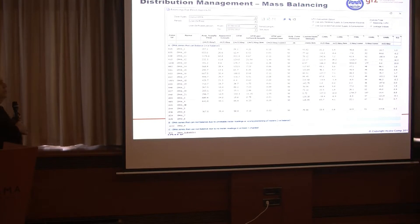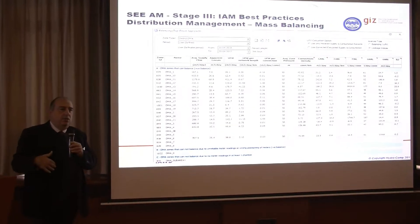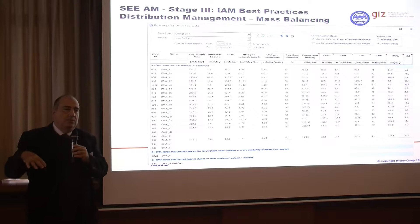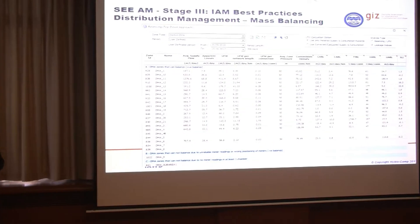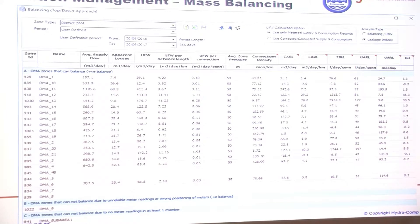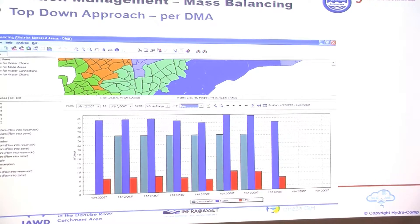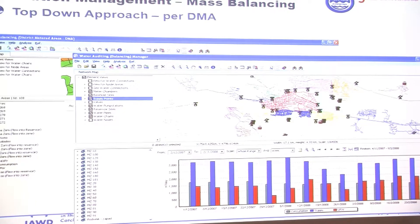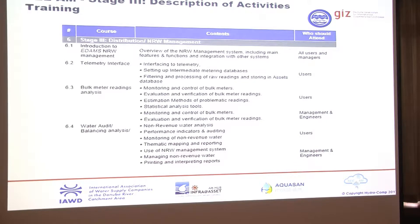But we can also follow the top-down approach. What I just showed you briefly is the bottom-up approach. Top-down approach means we balance the supply with the billing records and the grouping. We can see for longer periods — a week, month, year — what is the actual balancing for each of the zones. We can produce different types of graphs for any kind of period. This session is accompanied by training for understanding how we link to telemetry, how we analyze bulk metering, and how we do balancing top-down and bottom-up based on IWA best practices, which are fully incorporated in the system.